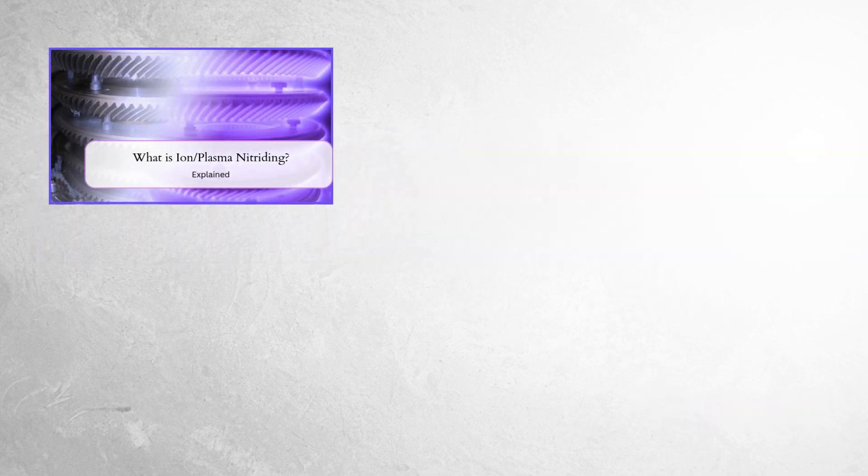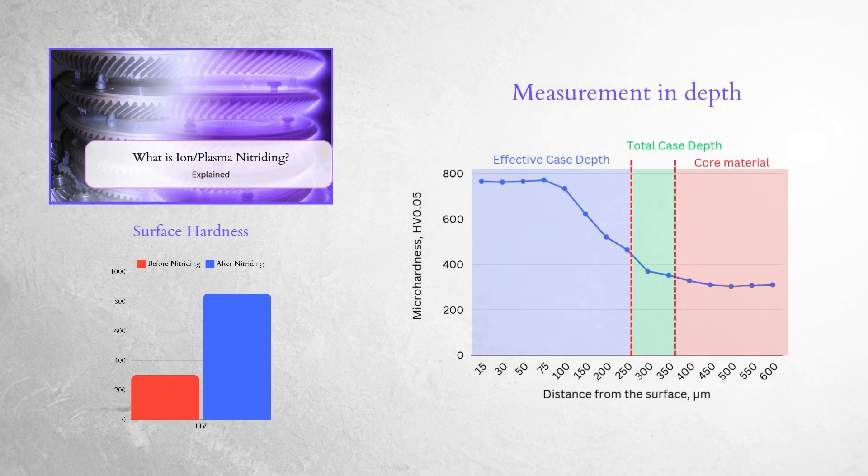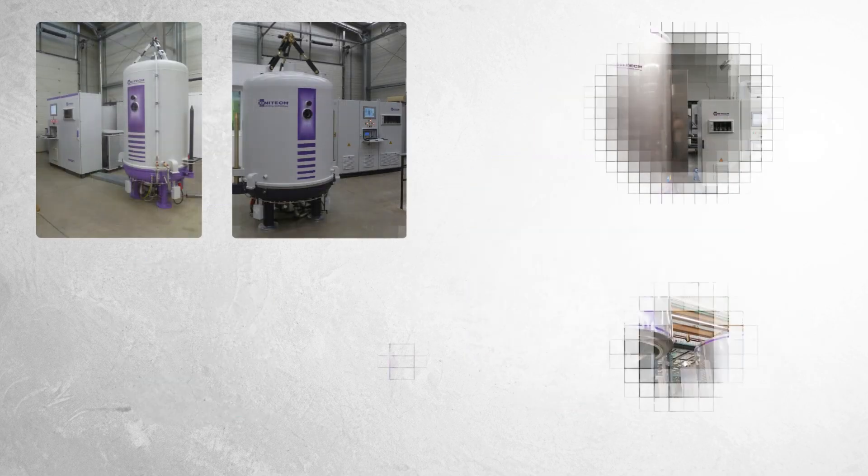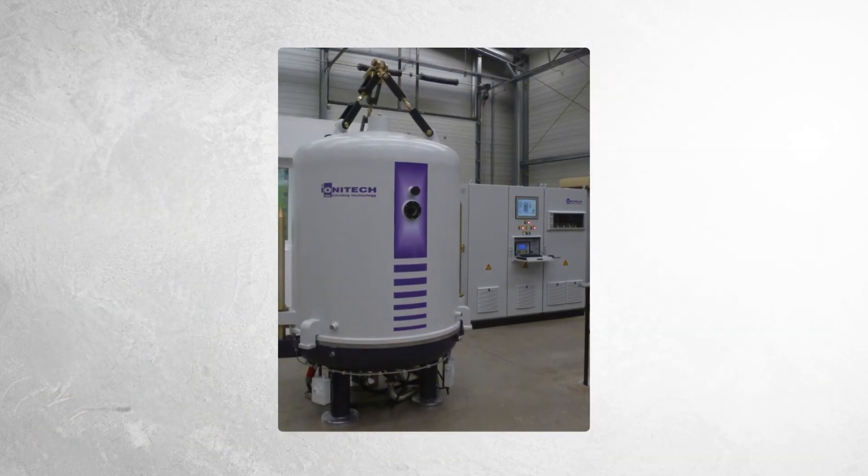We have already explored the effects of ion plasma nitriding, how it affects and improves steel parts, their surface hardness, wear resistance, and fatigue life. Now let us focus on what exactly happens inside the chamber during the process and delve into the mechanics.